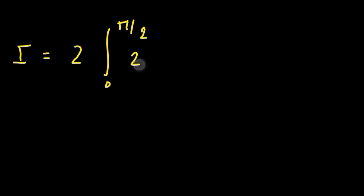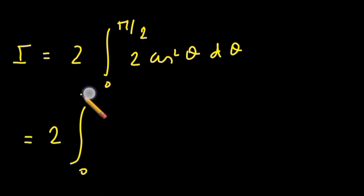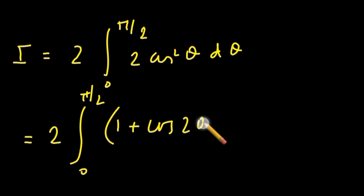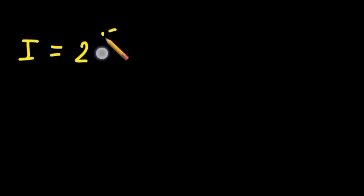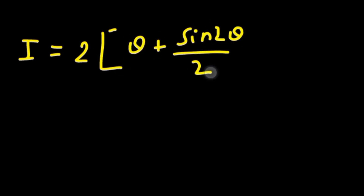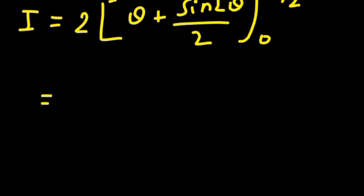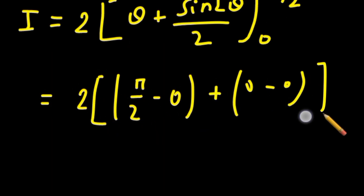We replace 2 cosine squared theta with 1 plus cosine 2 theta. These are standard integrals, so by integrating we get theta plus sine 2 theta over 2, evaluated over the limit 0 to pi over 2, which will be equal to pi over 2 minus 0 plus 0 minus 0.